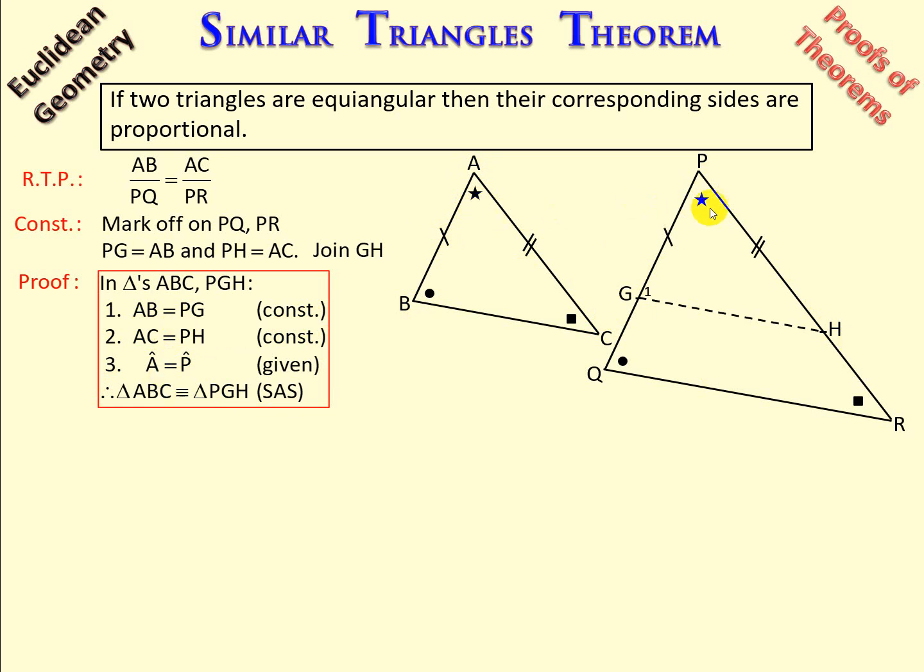And number three, A is equal to P, and that was given as the triangles were equiangular.